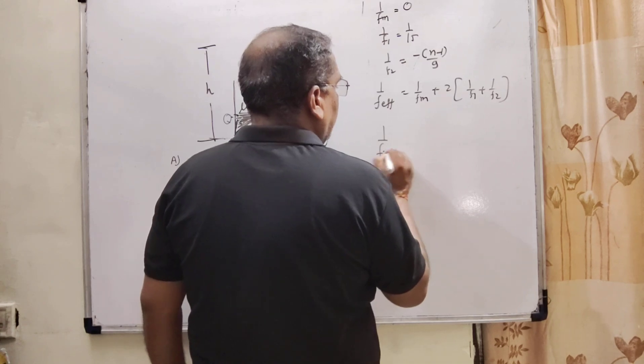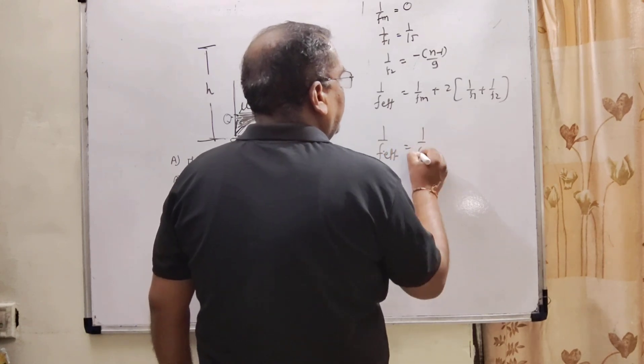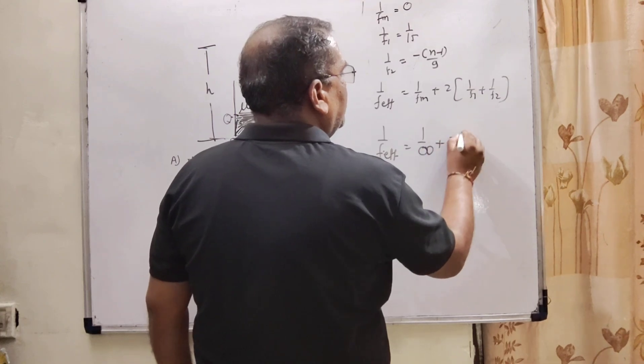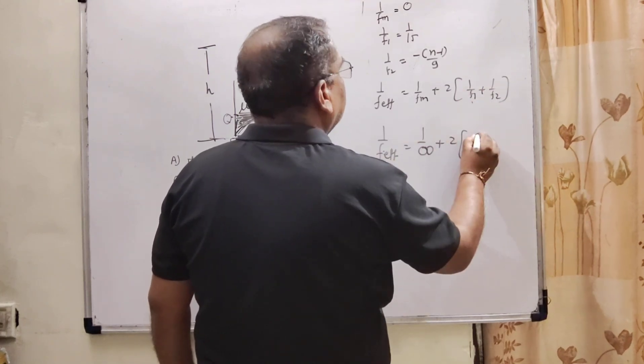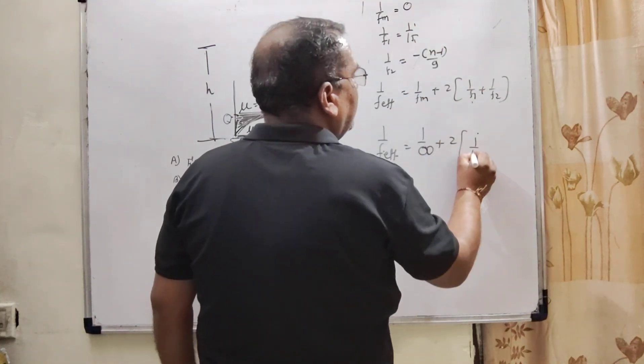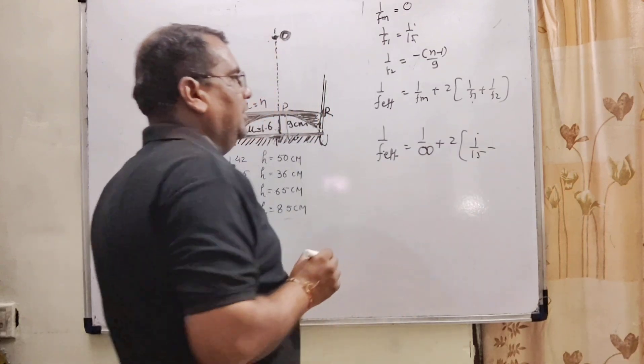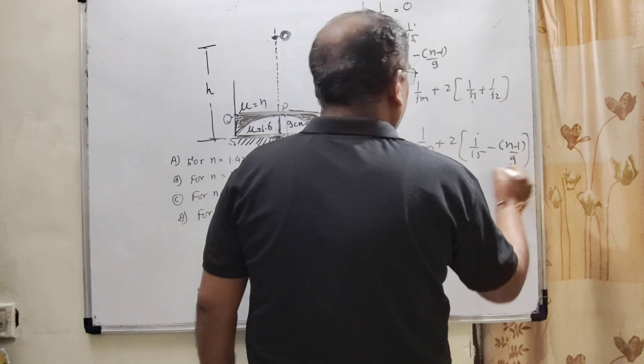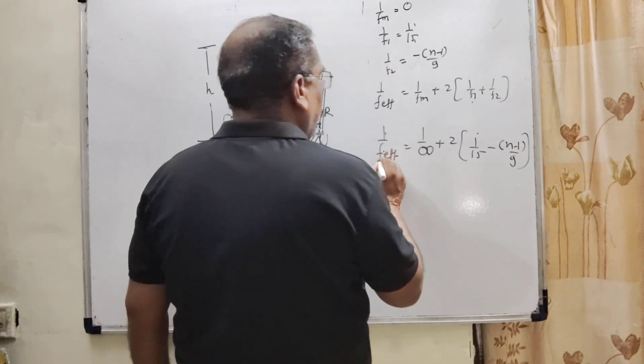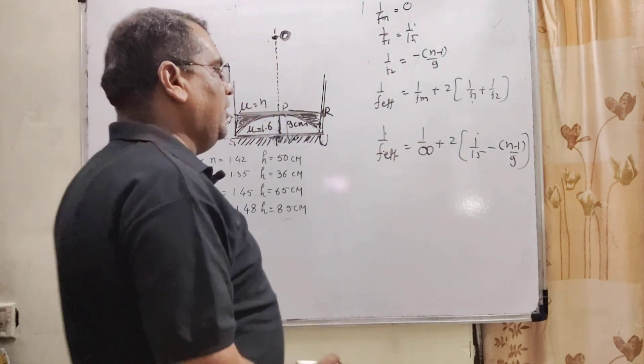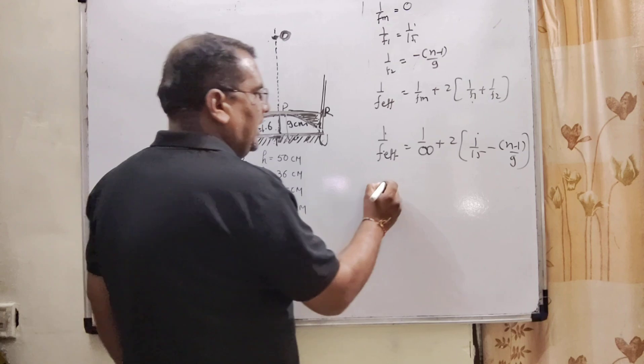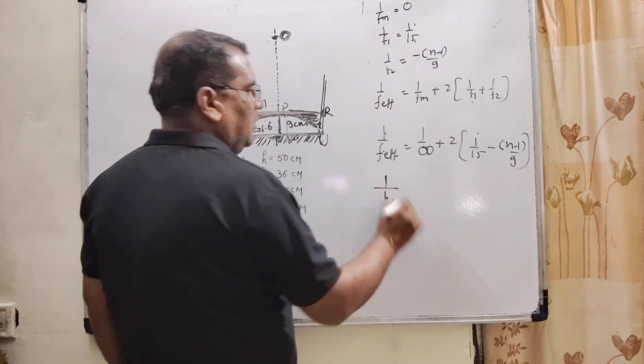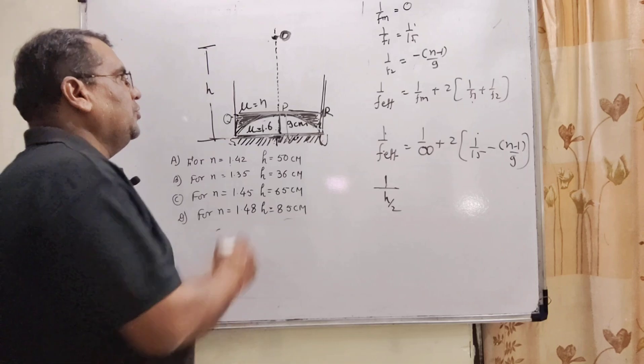Now substituting all these values: f effective equals 1 by fm, that is 0, plus 2 times 1 by f1, which is 1 by 15, plus 2 times n minus 1 times minus 1 by 9. We already found that 1 by f equals 1 by h by 2, which is 2 by h.